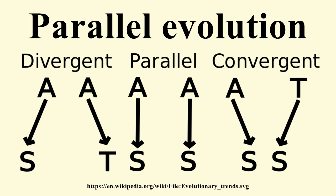Any case in which lineages do not evolve together at the same time in the same ecospace might be described as convergent evolution. The definition of a trait is crucial in deciding whether a change is seen as divergent, or as parallel or convergent. For example, the evolution of the sesamoid thumb of the giant panda certainly is not parallel to that of the thumbs of primates, particularly hominins, and it also differs morphologically from primate thumbs.